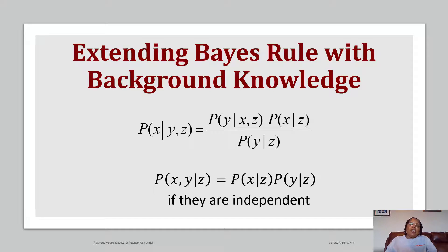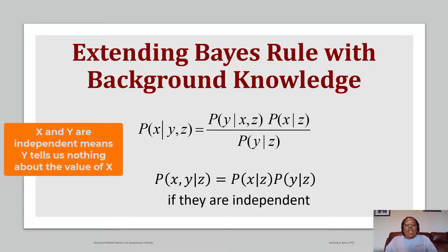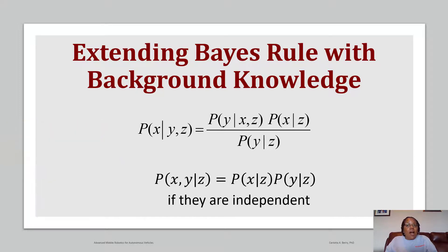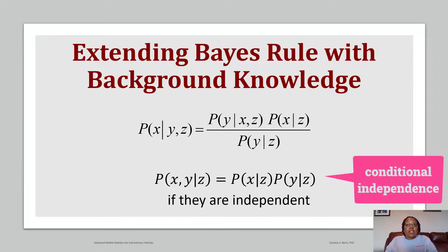You can also extend Bayes' rule with additional background knowledge. Assuming we have P(X|Y,Z), where Z is our background knowledge, then P(X|Y,Z) = P(Y|X,Z)·P(X|Z) / P(Y|Z). If X and Y are independent, we can also write P(X,Y|Z) = P(X|Z)·P(Y|Z).